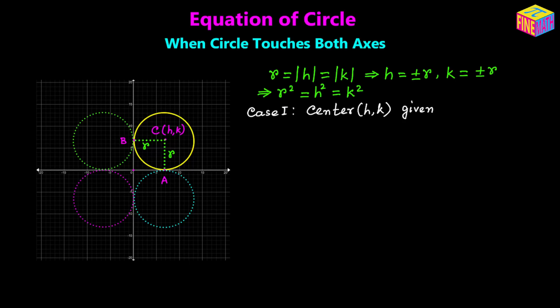Now we are going to take a couple of cases. In the first case, let's assume that we have been provided with the coordinates of the center of a circle and also told that the circle touches both the axes. We can start with the fundamental equation of a circle: (x − h)² + (y − k)² = r². In place of r squared, I have put h squared — you can also put k squared because h squared and k squared will be equal, the same value. So for this situation, that will be the equation of the circle.